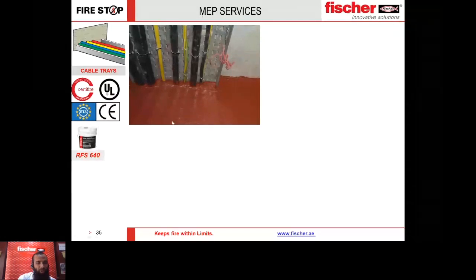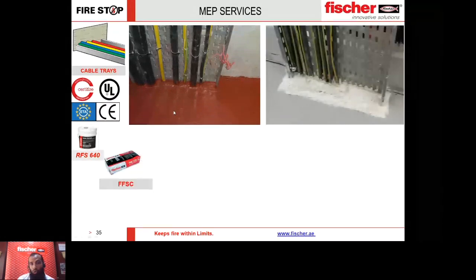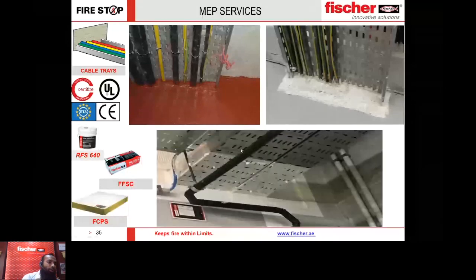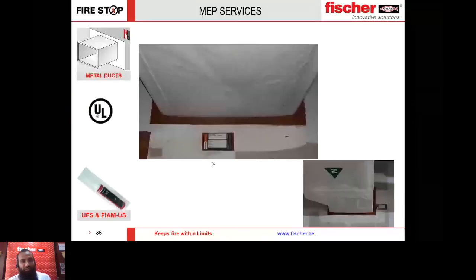For electrical services and cable trays, the solution is mineral wool backing with RFS 640 at just 3 mm thick. You can also use a mortar at 65 mm thick to achieve a 2-hour fire rating, but RFS is preferred — applied with a spray machine or scraper. The easiest application-wise is our FCPS board, which can be used for cable trays without overcoating.